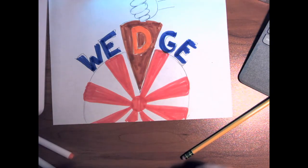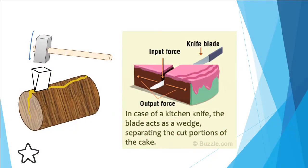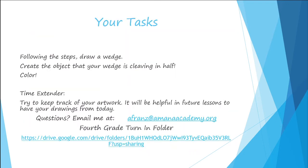Ta-da, pretty simple, pretty easy, I want you to show me. You are going to be following the steps, draw a wedge, create the object that your wedge is cleaving in half, and color the whole thing.